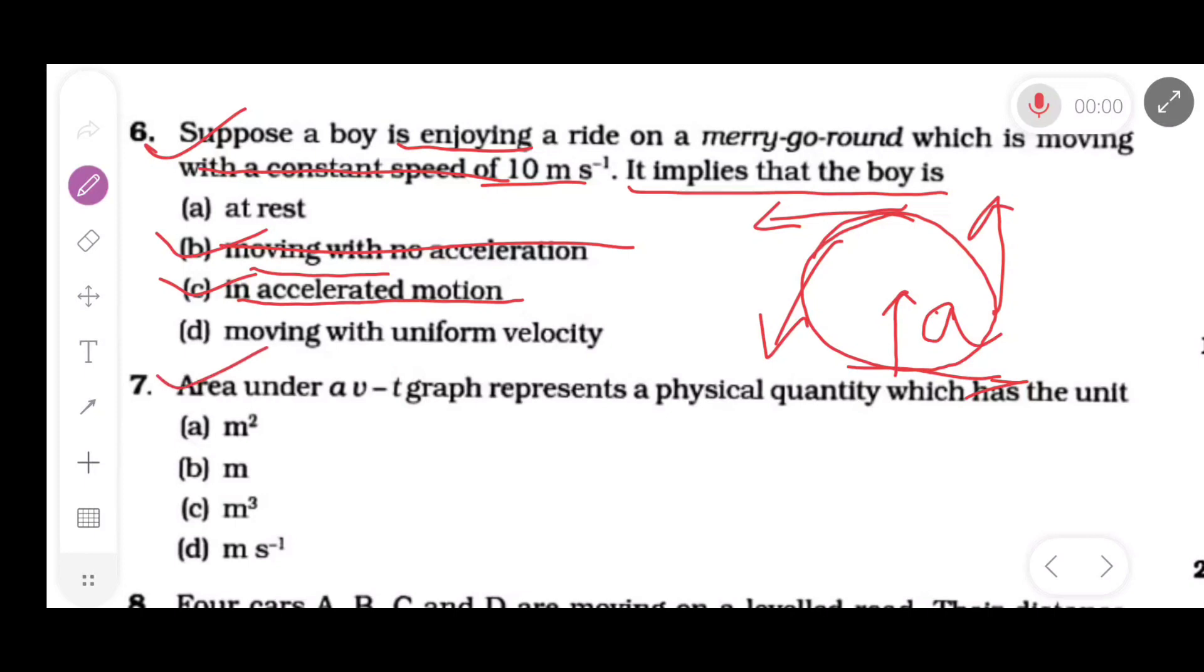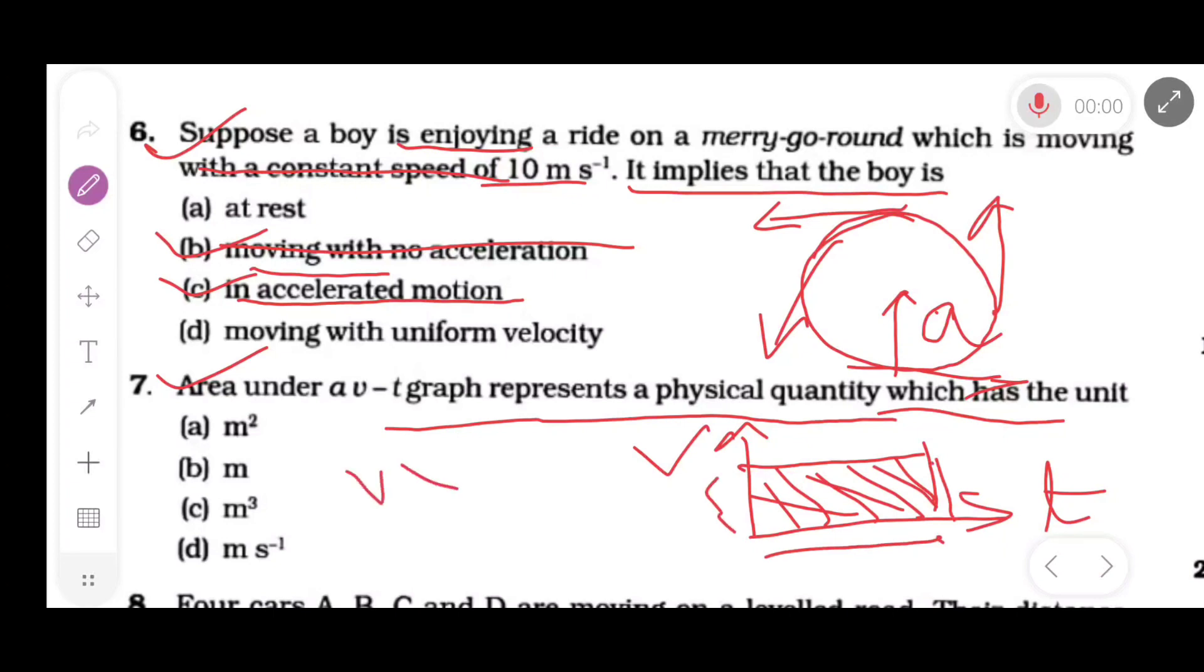Now question 7. The area under a V-t graph represents the physical quantity which has the unit. This is the V-t graph. Now suppose the body moves with uniform velocity. The shaded area is the area of V-t graph. This is the length T and breadth V. So area is V × T. Now V = S/T × T, so this is S. S has unit meter. So meter is the correct option for the physical quantity which represents the area of V-t graph.